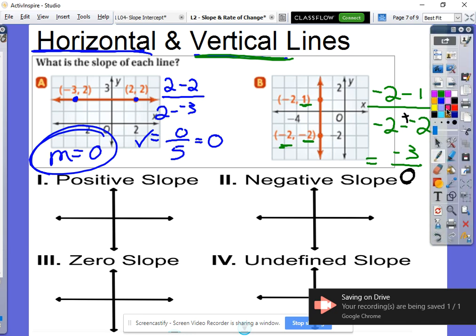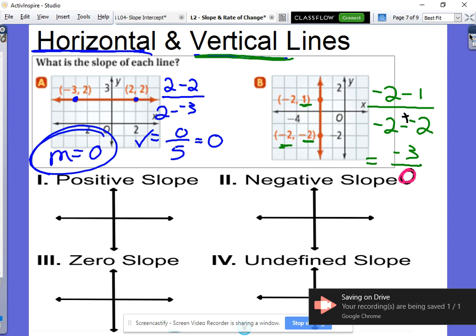Hold on a second, negative three over zero. This is not allowed right here. Negative three divided by zero is a big no-no. Okay, you are not allowed to divide by zero. So what that means is this is actually what we call undefined slope. Undefined is what we call that.